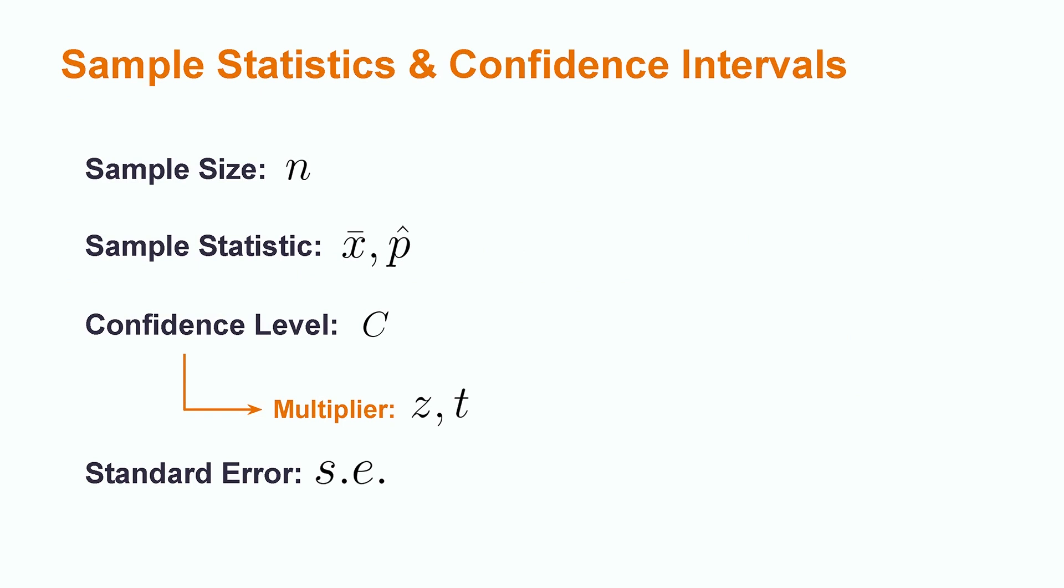The sample size, a sample statistic, the confidence level, and some form of standard error are all required to calculate a confidence interval. Notationally, the confidence level is frequently associated with the value 1 minus alpha, which is itself the significance level. This is important when consulting lookup tables for the multipliers. For example, a 95% confidence interval leads to a 5% significance level.